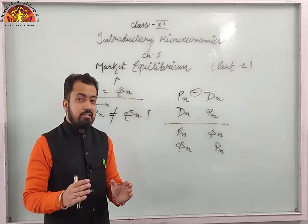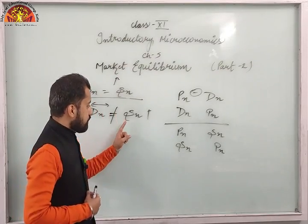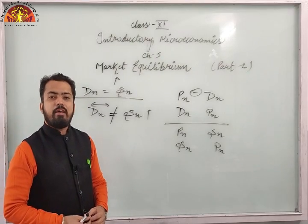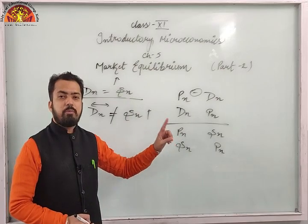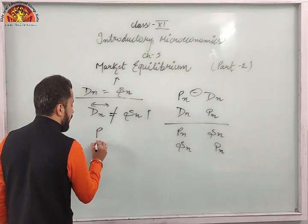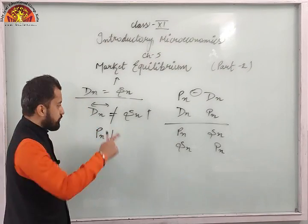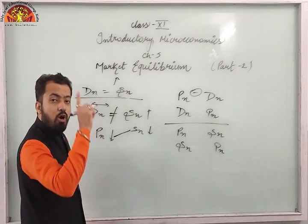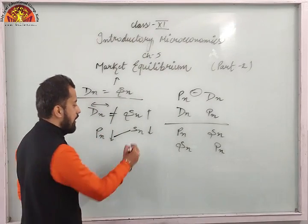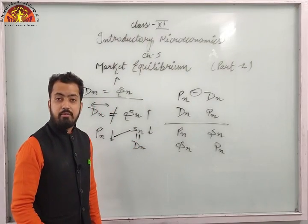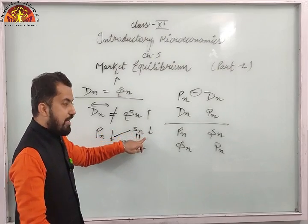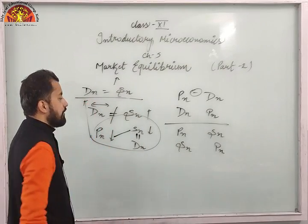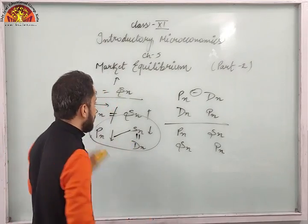The single reason behind excess supply is profit maximization. To restore equilibrium, the price (PX) will reduce. As price reduces, supply also reduces. We need to keep reducing the price until SX equals DX — that is, until we regain the market equilibrium condition.